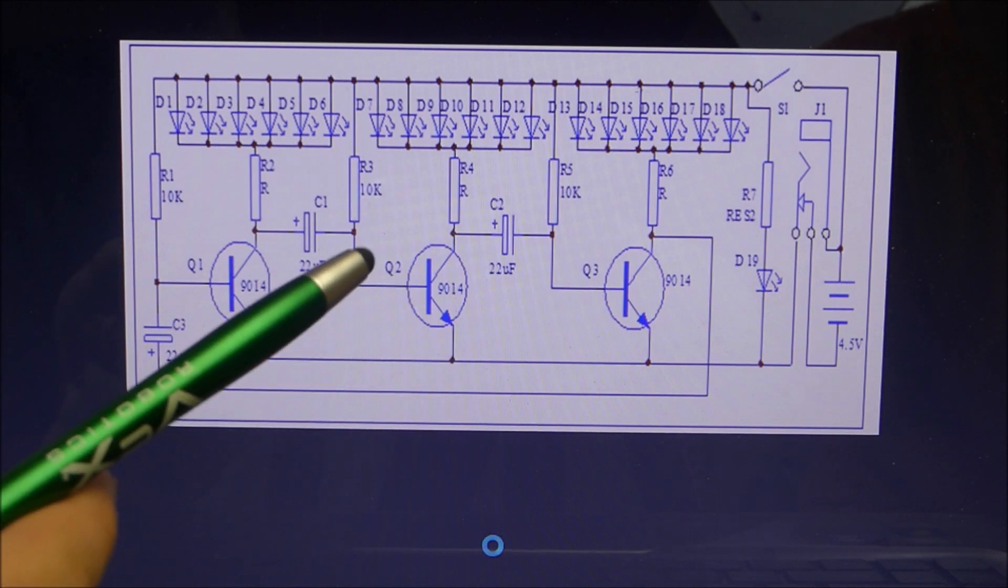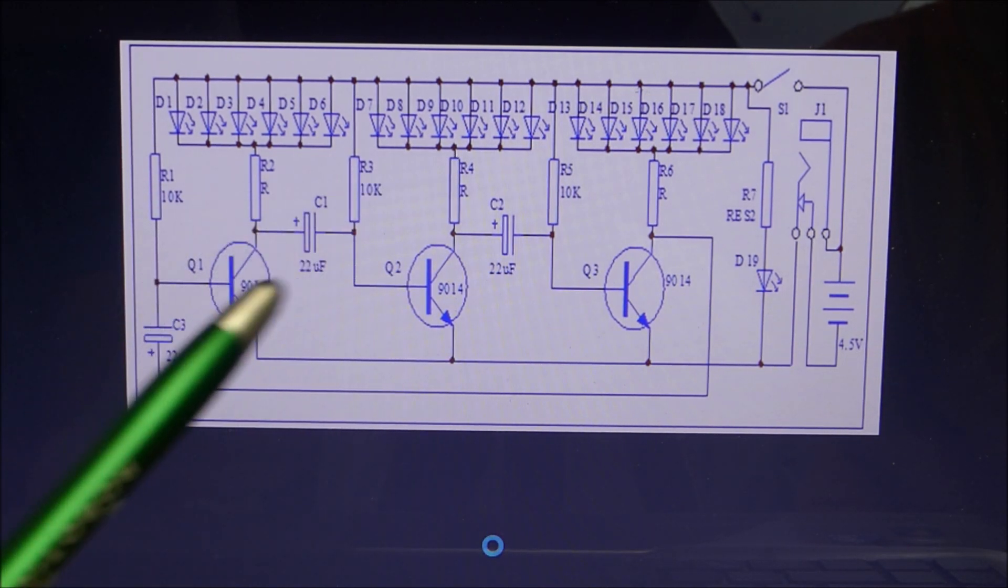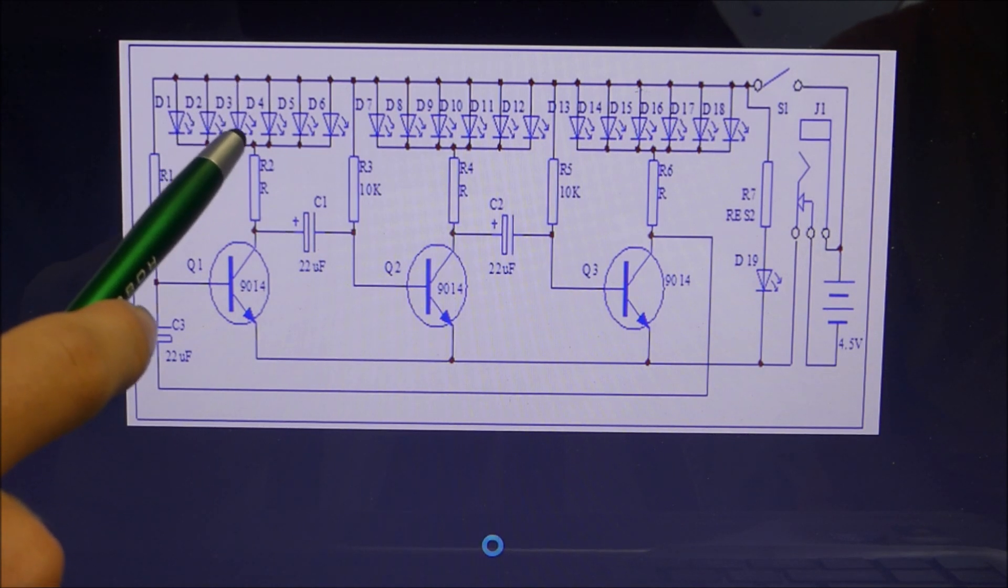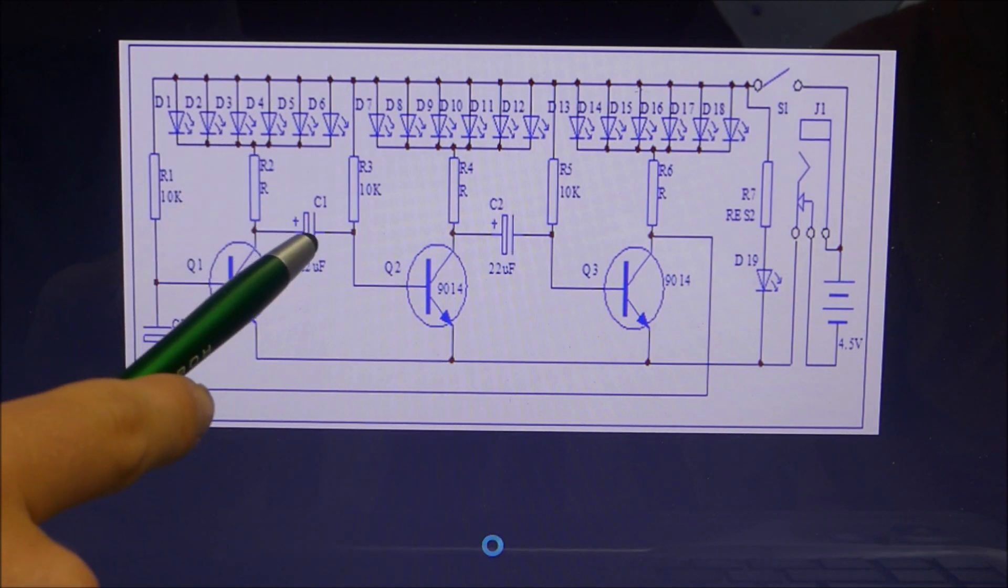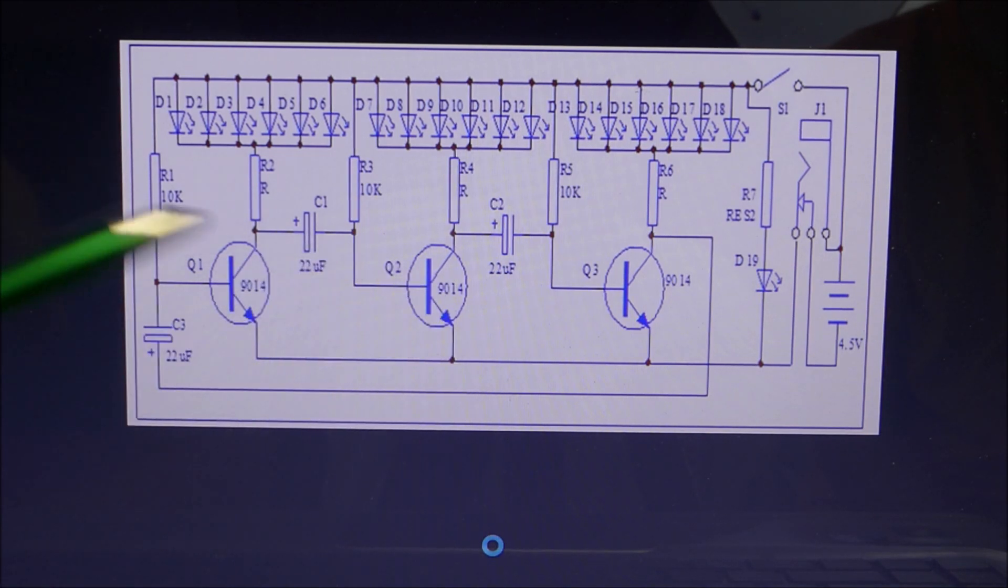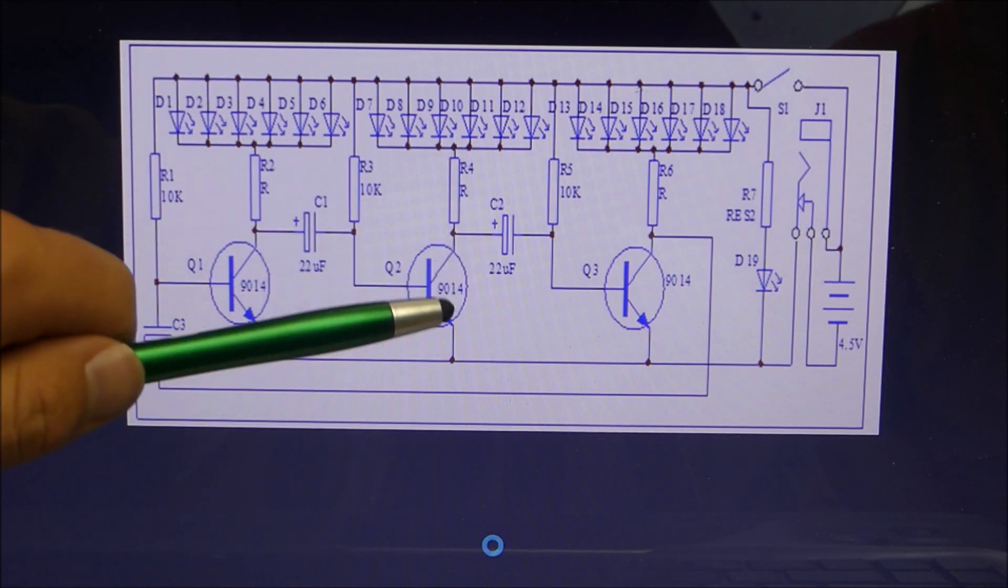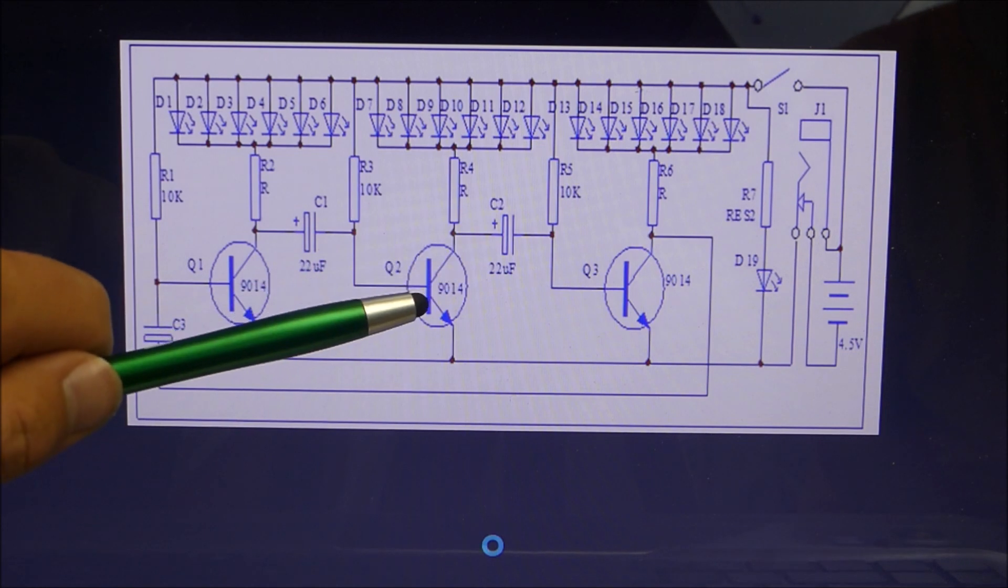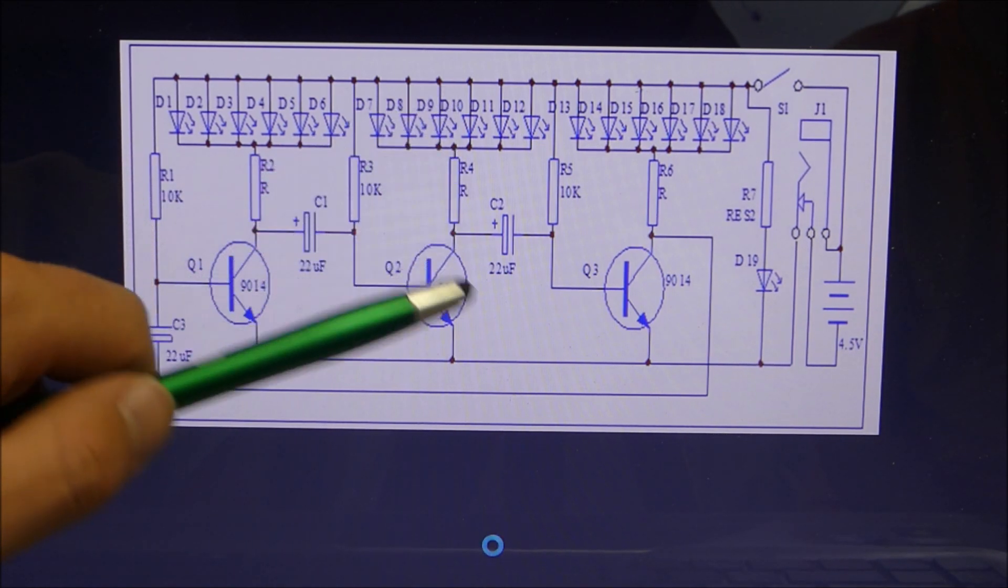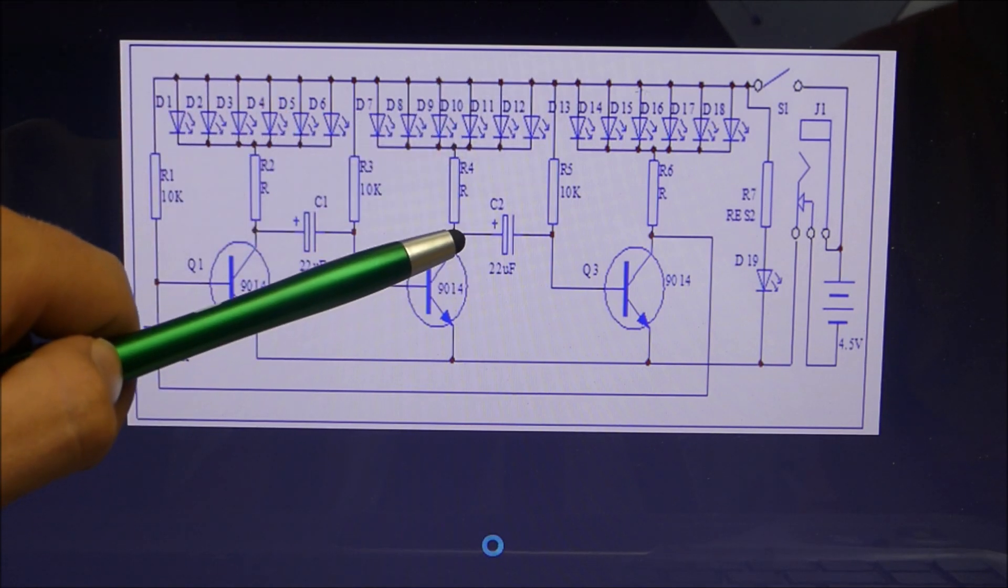Now to how this ring oscillator works. Basically what happens is you're going to have the current flow through these LEDs, through this resistor and through the capacitor, and to this transistor to ground. This capacitor is going to charge up slowly because of the current flow, and because there's current flowing through here, it's going to turn on this transistor because transistors are activated by current.